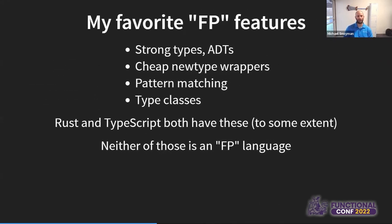Now let's talk about FP. These are my personal favorite FP features. I love the fact that when I write Haskell code, I have strong types and ADTs — algebraic data types. That's such a huge step forward from everything I used before; I never want to use a language without them again. Cheap newtype wrappers are another massive part of my Haskell experience — I think they make code quality much better. Pattern matching is so much better than other ways of doing conditionals. Type classes are a smarter, easier-to-work-with approach than interfaces, abstract classes, or other approaches we had previously. What's really interesting is the two languages I've been working with most recently — Rust and TypeScript — both have most of these features.